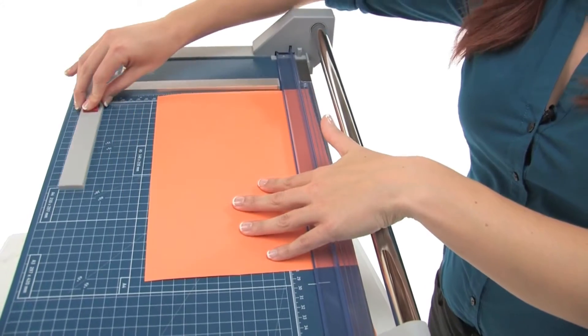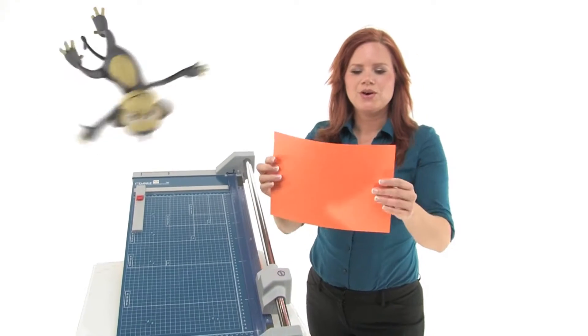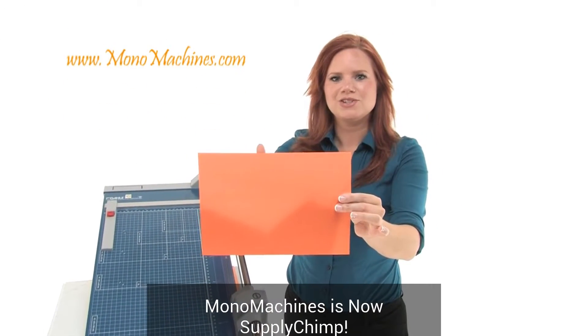Now this can cut up to 20 sheets of paper at one time. It can also do card stock, construction paper, and photo paper. Go ahead and have a look at that lovely straight line.